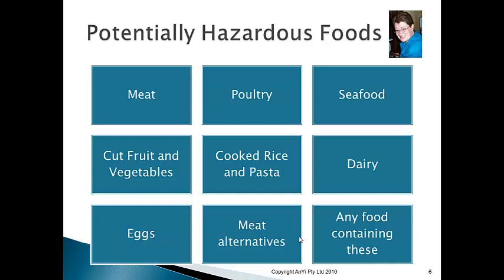Eggs are a huge problem. Australia's biggest food poisoning incident happened in May 2013, caused by cracked eggs being used in raw products. The eggshell, like our skin, protects what's inside. If it has any cracks or holes, bacteria in the air or on surfaces will get inside and grow. Cracked eggs can be used, but the contents must be fully cooked — they cannot be used for raw products.